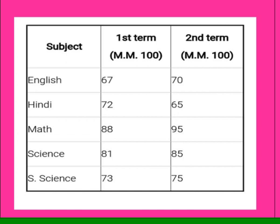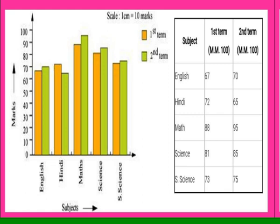Question 4: we are given a table showing marks in English, Hindi, Math, Science, and Social Science for Term 1 and Term 2. We draw a double bar graph where the x-axis shows subjects and the y-axis uses a scale of 1 cm = 10 marks. Two different colors differentiate the bars — orange for Term 1 marks and green for Term 2 marks.